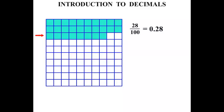So we have 28 hundredths. And as a decimal, we write that as 0.28.